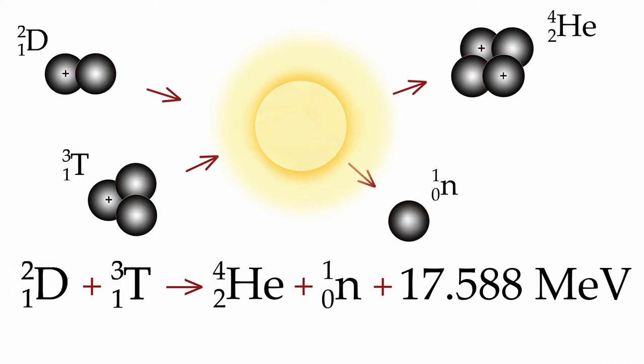But when the deuterium and the tritium combine, they not only make a helium and a neutron, they also produce an enormous amount of energy, about 17 million electron volts, which means that it would be the energy that an electron would have if it crossed between two wires that were separated by 17 million volts. So that's a tremendously powerful reaction.